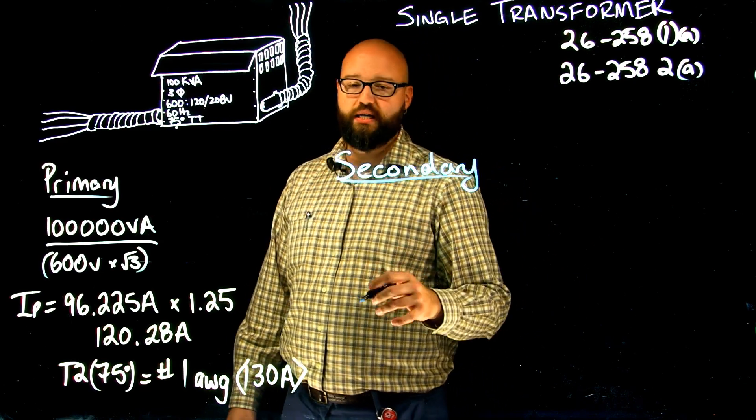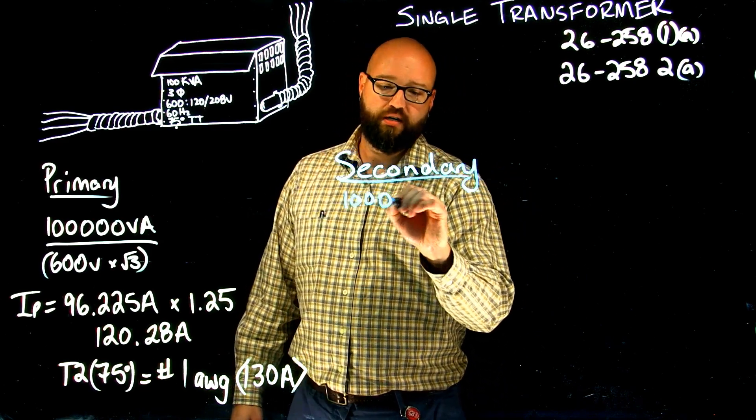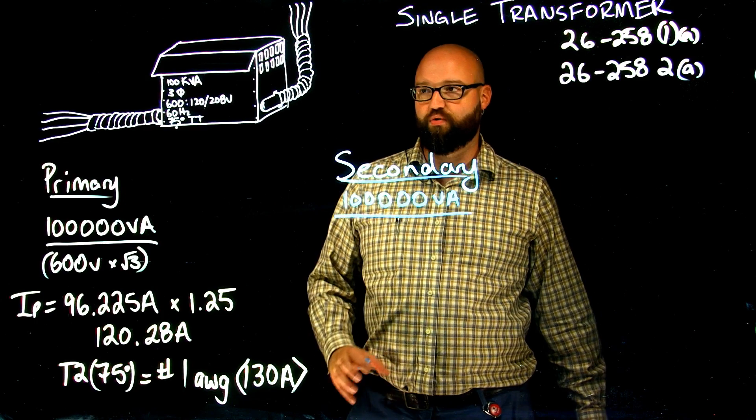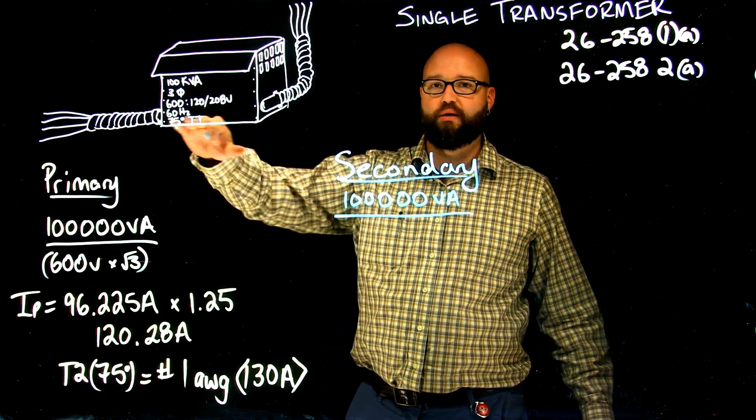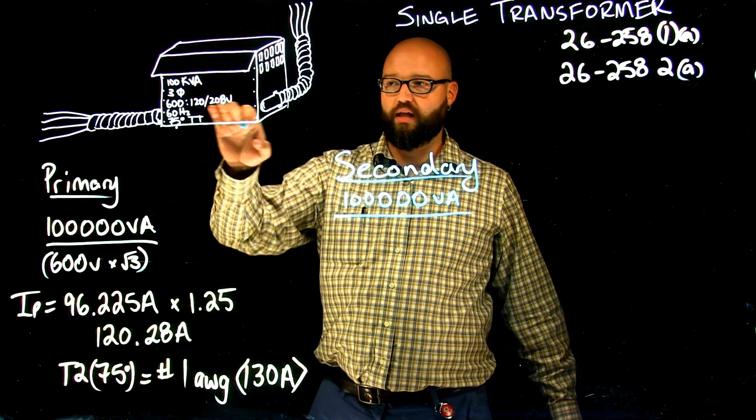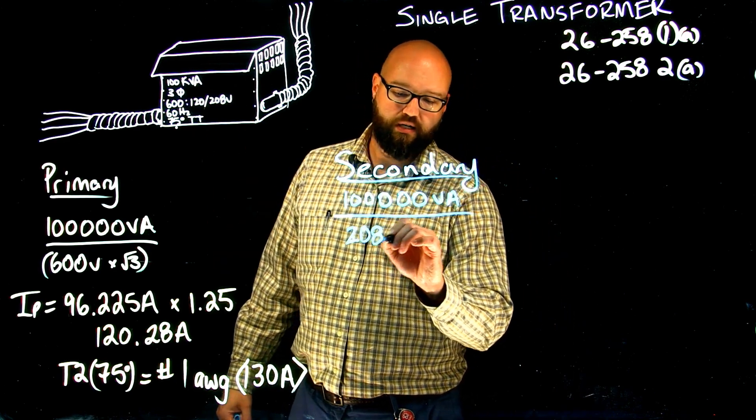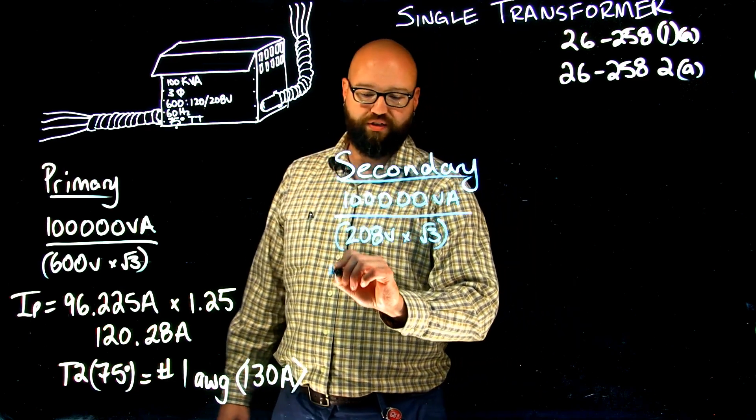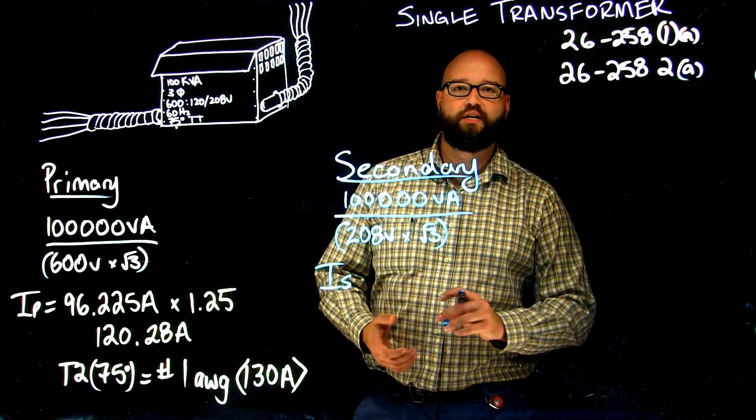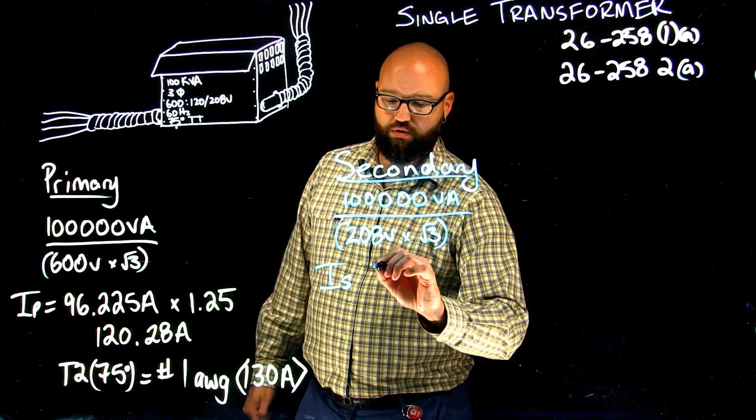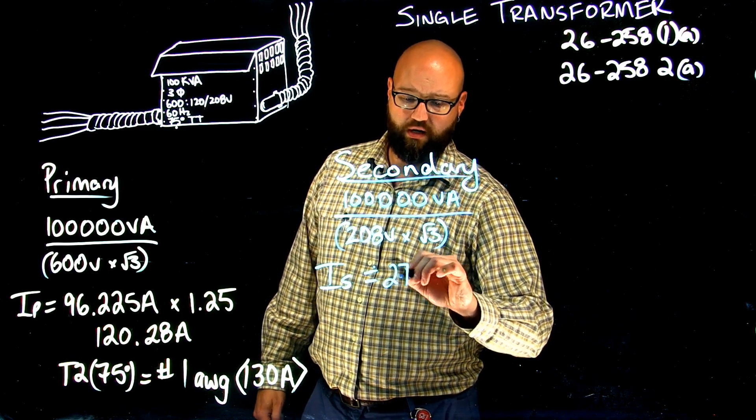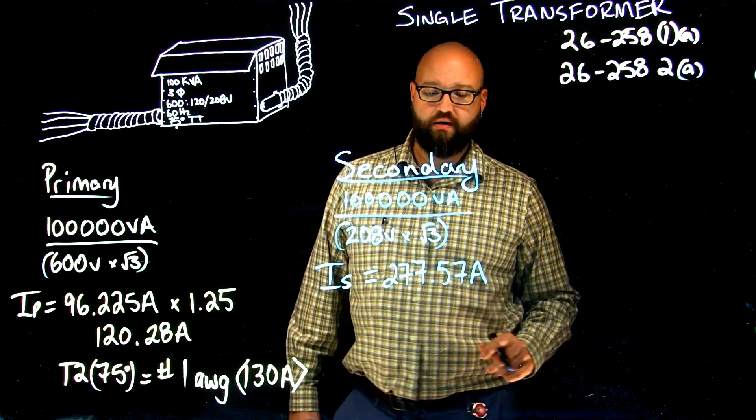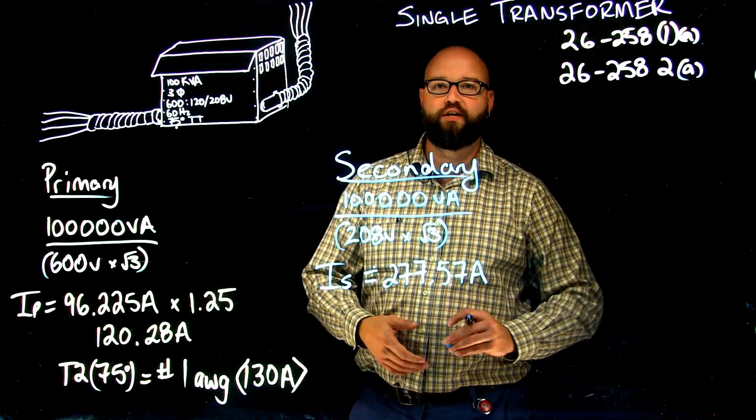Again, VA in equals VA out. 100,000 VA divided by my secondary line voltage times root 3. I have 120/208, 120 being my phase voltage, 208 being my line voltage. That's the number we're going to use, 208 volts times root 3. Make sure we get that in brackets. I end up with current on the secondary, rated current is around 277.57 amps. That is how much current will flow in the secondary at rated load.